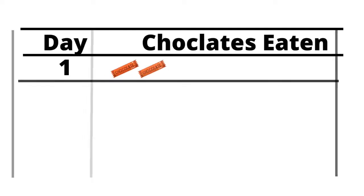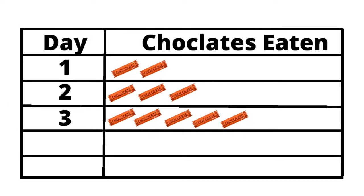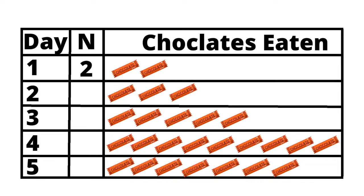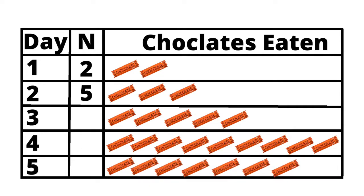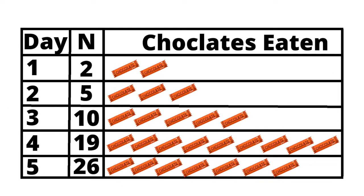Consider a situation where you are eating two chocolates on the first day, three chocolates on the second day, five chocolates on the third day, nine on the fourth day, and seven on the fifth day. If I tell you to calculate the total number of chocolates eaten until day one, the answer is two. Until day two it is five, day three is ten, and for the fourth and fifth days it is nineteen and twenty-six.